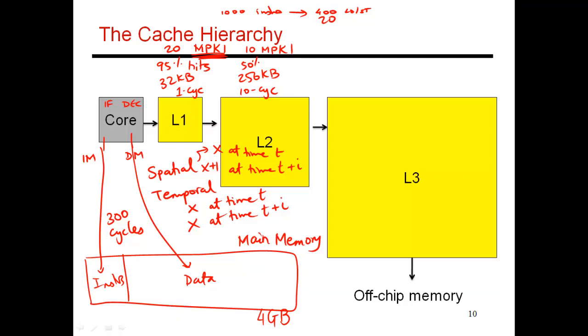So already some of the locality has kind of disappeared. So by the time you look it up in L2, the probability of finding the data there is somewhat small, or at least smaller. So 50% of the time, your lookup in L2 yields a hit. And the rest of the time, it's a miss.